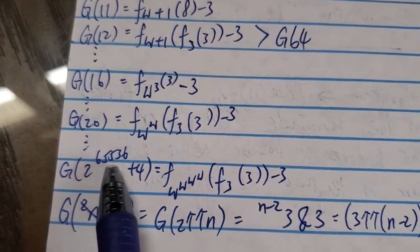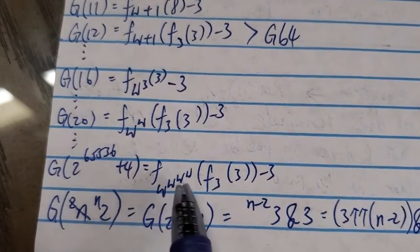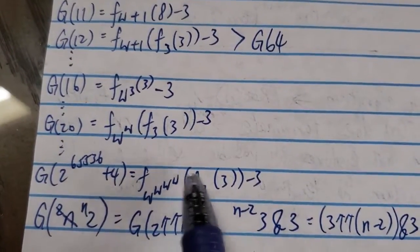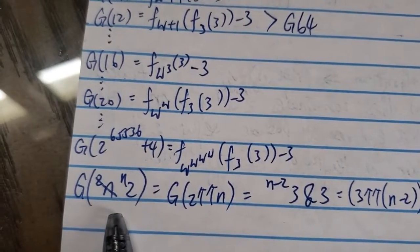It's f of omega to the omega to the omega to the omega of this thing. And the last example here.